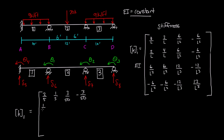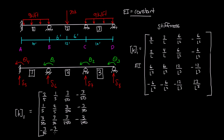Continuing with the next row: 1 fifth, 2 fifth, 3 over 50, negative 3 over 50. Then 3 over 50, 3 over 50, 3 over 250 — because for the 12 over L cubed spot, L cubed is 10 cubed equals 1000, so 12 over 1000 is 3 over 250. Then negative 3 over 250. And the final row: negative 3 over 50, negative 3 over 50, negative 3 over 250, and finally 3 over 250.